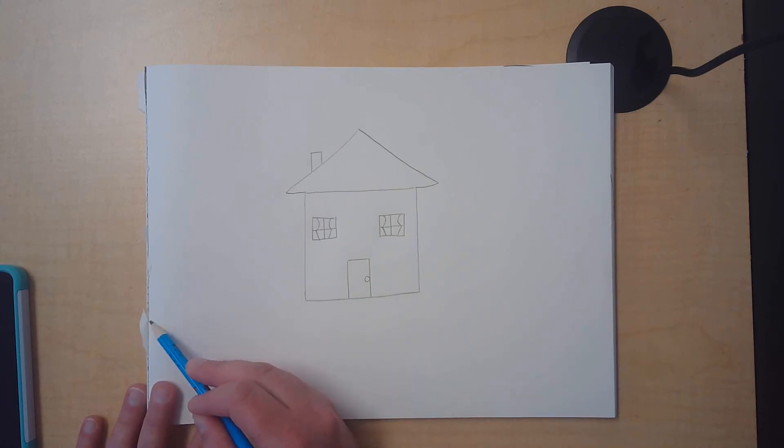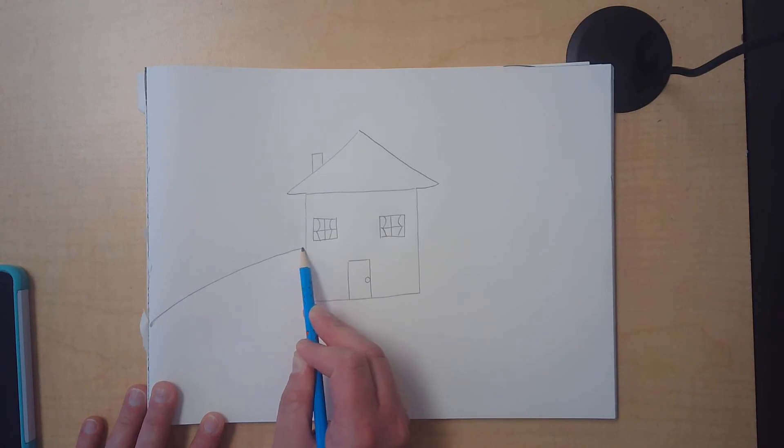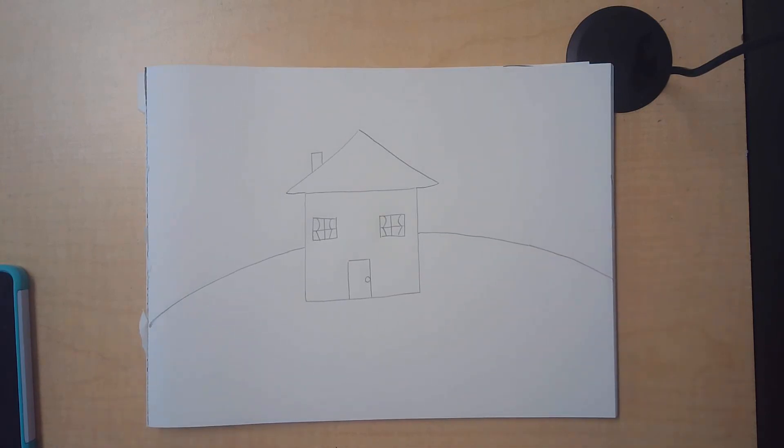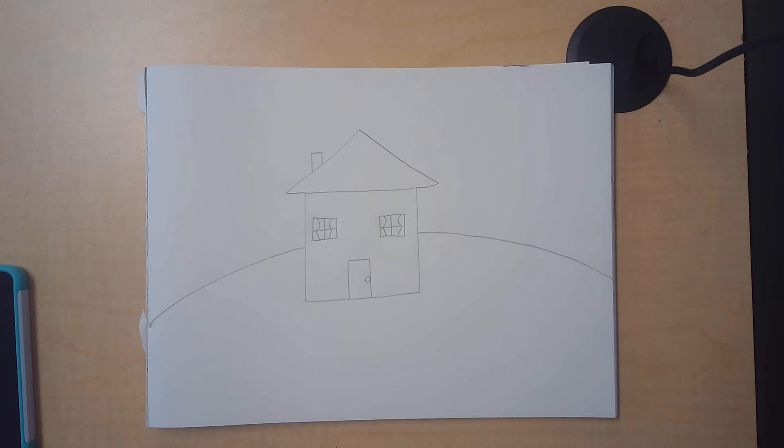I'm going to start on one side of my paper and draw a line that curves up. Whenever I get to the side of my house, I'm going to lift up my pencil. I'll put my pencil back down on the other side of my house and continue my curve until it goes all the way off the side of the page.